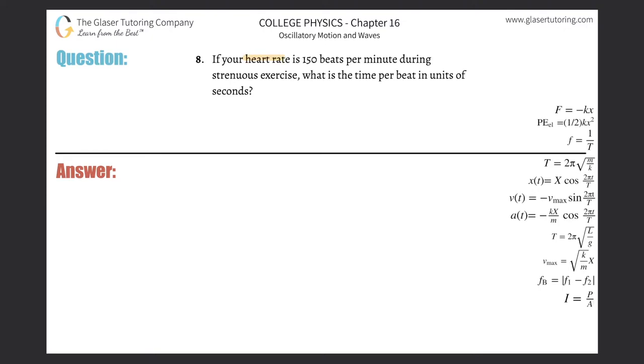Number eight. If your heart rate is 150 beats per minute during strenuous exercise, what is the time per beat in units of seconds? All right, so forget that they asked for seconds, let's just ask in units of minutes.